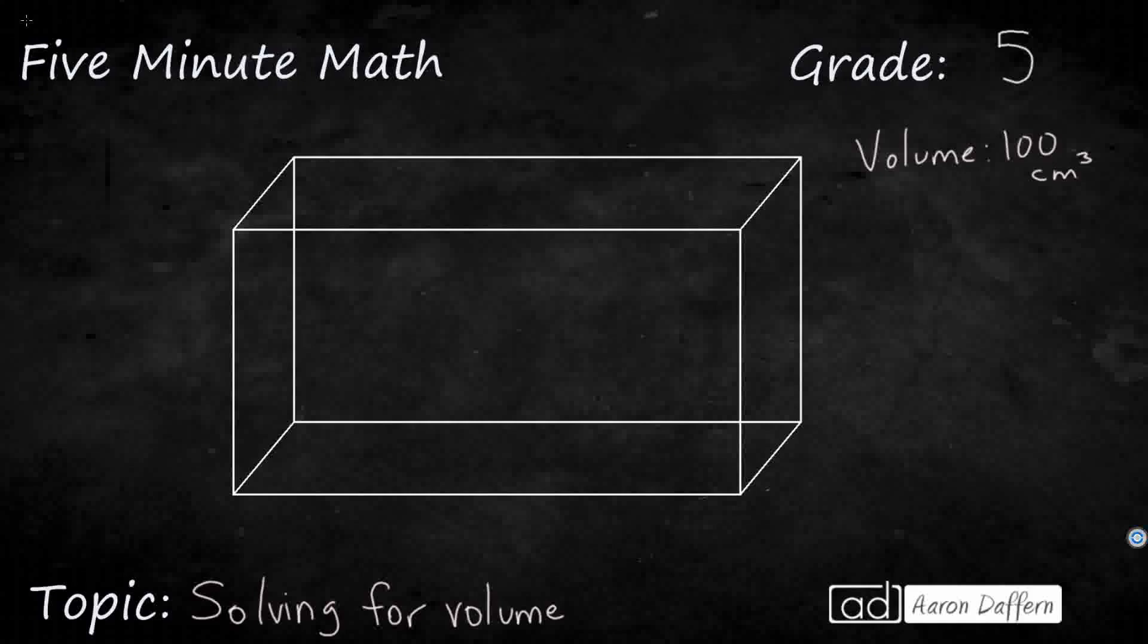That 3 exponent, that's what stands for cubic. That means that we could stack 100 cubes, that each 1 centimeter in volume, 1 cubic centimeter, we could stack 100 of them inside this rectangular prism. That's what that means, because we're measuring the amount of space inside this object.